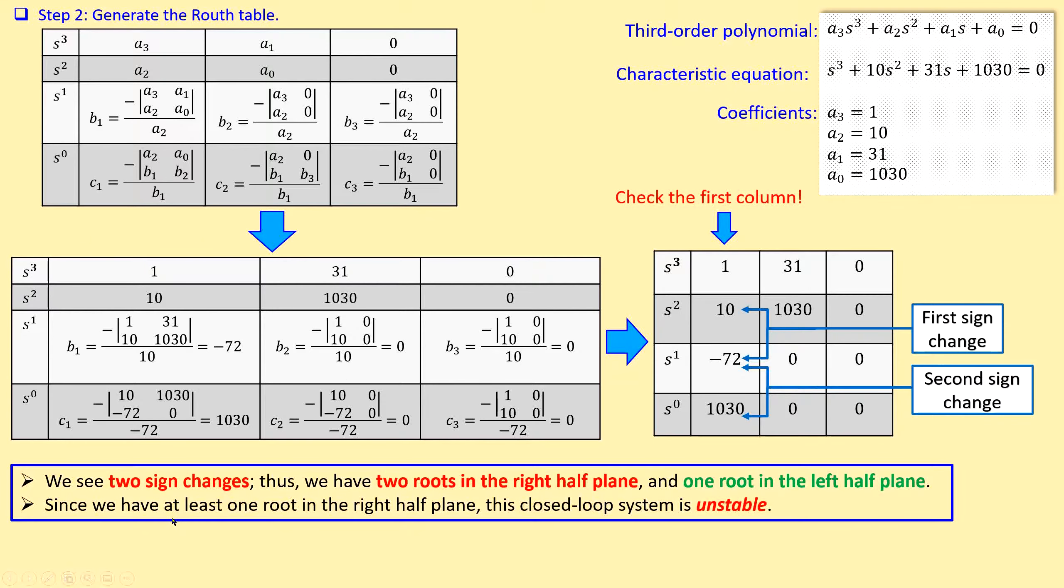Since we have at least one root in the right half plane, this closed loop system is unstable. This is actually our conclusion. Again, this closed loop system is unstable. Why? Because we have at least one sign change, and that means that this closed system is unstable.